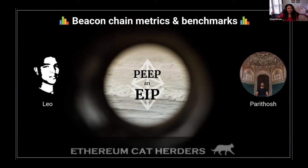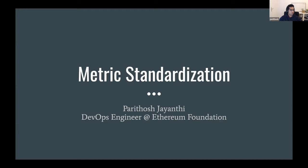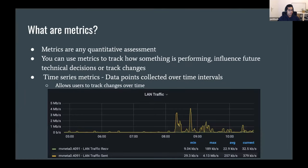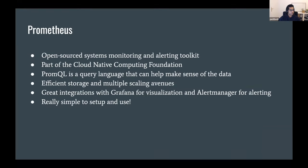Starting off — I'll be talking about metrics standardization today. Before we begin: what are metrics? Metrics are quantitative assessments you can use to track how something is performing. When you can track them, you can use them to influence future decisions and see if changes you made actually worked. A very common form is time series metrics — data points collected over time intervals. A simple example: a graph of internet traffic at my household could tell me whether I'm hitting a bottleneck and need to upgrade.